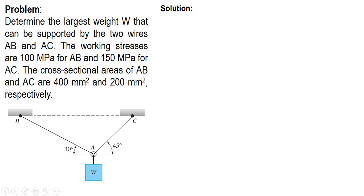What we're going to do is cut a section in wires EB and EC and identify the forces acting in them. This gives us tension as the resisting force of wire EB, the resisting force of wire EC, and the third force is the weight W.